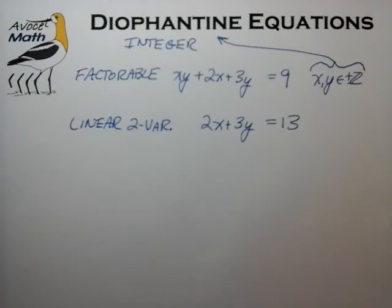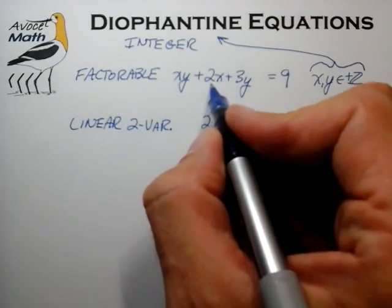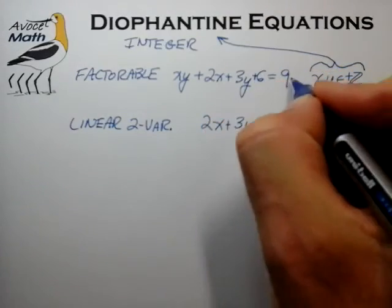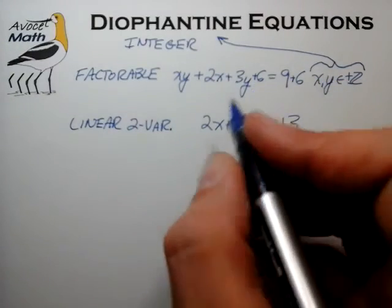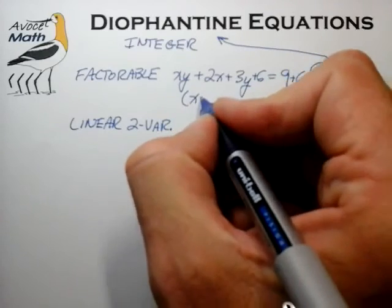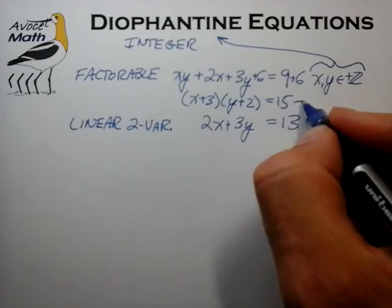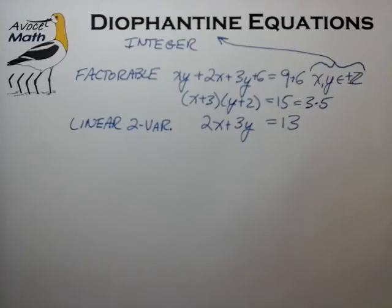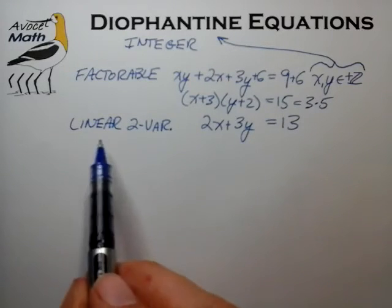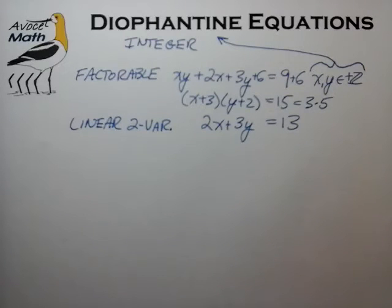The factorable equation is amenable to a factoring method whereby we can take the product of these two coefficients, 2 times 3, add it to both sides of the equation, and the terms on the left can be factored into a very useful form. In this case, (x+3)(y+2) = 15. We can break down 15 into its prime factors, 3 times 5, and apply the fundamental theorem of arithmetic to compare the integer factors on the left to those on the right, arriving at a unique solution or at least limiting the possible solutions to a small manageable set. This linear two-variable equation is inherently unfactorable and requires other methods of solution.